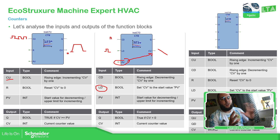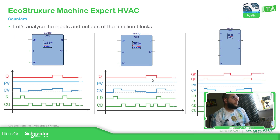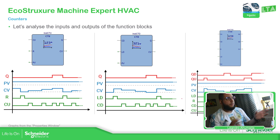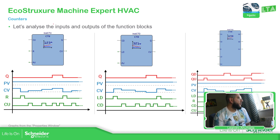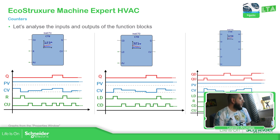And here CTUD is a combination of both of them. So here we can see it much better — these diagrams I believe are from the software. Let's start with counting up. Here you can see the output that's going to be activated when we reach the same value for the CV and the PV. Here I have the R for the reset — it will reset the value, you can see it goes to zero.